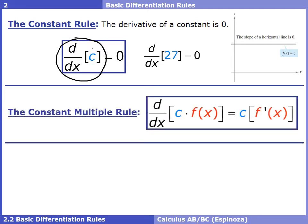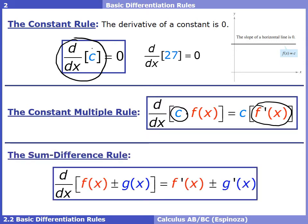The constant multiple rule: we can pull out constants when taking derivatives. If you have a constant times a function, you can ignore the constant, take the derivative of the function, and then multiply by that constant. Next, the sum/difference rule: if you take two functions and add or subtract them, we can split that into two pieces — take the derivative of each function individually, and then add or subtract those depending on the signs being used.